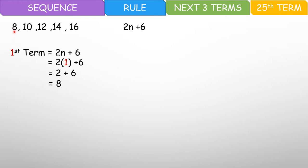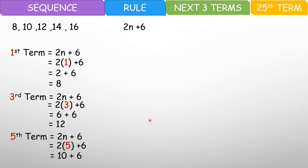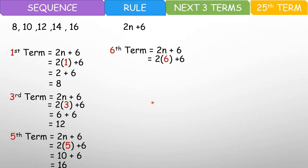And first term ba yan? Yes. Ayan siya. Let's have the third term. 2n plus 6 — palitan natin ito ng 3. So 2 times 3, plus 6. 2 times 3 is 6, plus 6, and you have 12. Third term ba yung 12? Yes, diba? Fifth term — you have 2n plus 6. So 2 times 5 plus 6, and that is 10 plus 6, and that would be 16. Eto yung fifth term natin.